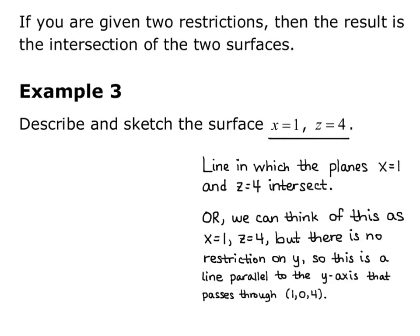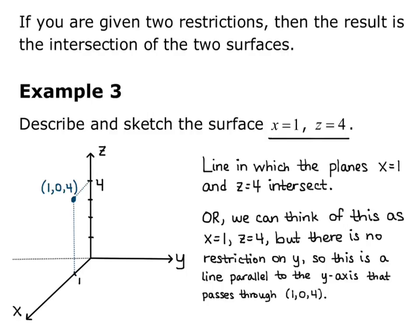I'm going to use this second description to graph my line. I draw my x, y, and z axes, making sure to label them appropriately, and I put in the points x equals 1, z equals 4 to plot the point 1, 0, 4. Then I want a line through that point parallel to the y-axis. So there's my graph.